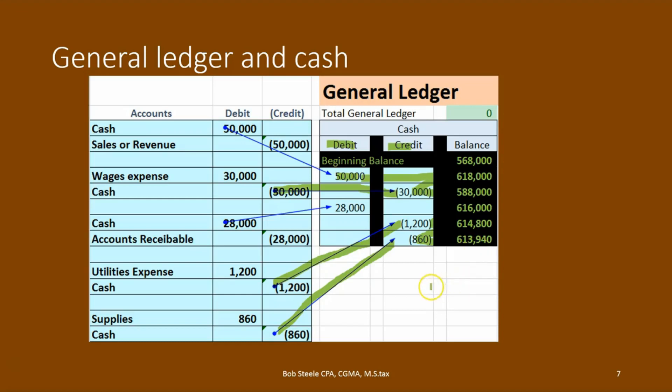Now, you might say — well, it's possible that the credits could win. What if you wrote a check for $700,000? Then the credits would be beating the debits, which would flip the sign. And that could happen — that would mean we overdrew the account. And if that happened, is it really an asset anymore? No. It flips to a liability — we owe that money back. So if the credits win in the checking account, that means we have an overdrawn account, which is a liability.